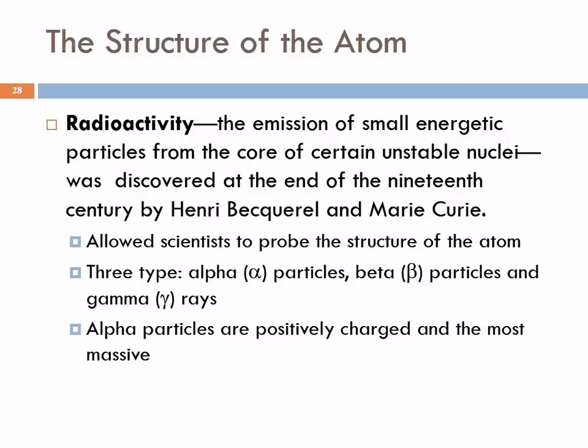Before we can talk about how that model was tested, we need a very short introduction to radioactivity. Radioactivity is the emission of small energetic particles from the core of certain unstable nuclei. This was discovered at the end of the 19th century by Henri Becquerel and Marie Curie. Radioactivity allowed scientists to probe the structure of the inside of the atom. Three types of radiation: alpha particles, beta particles, and gamma rays - named for the first three letters of the Greek alphabet.